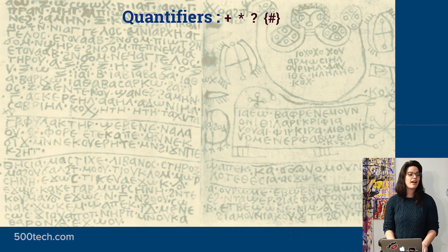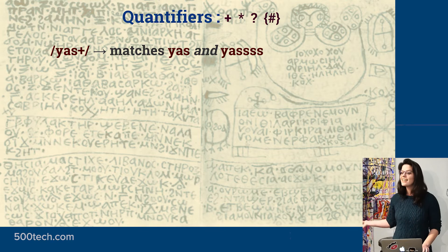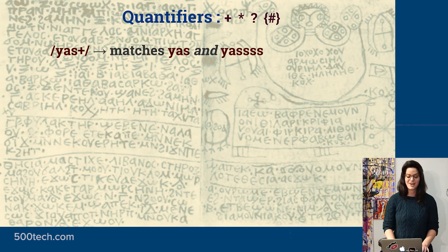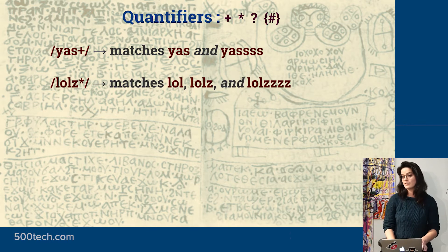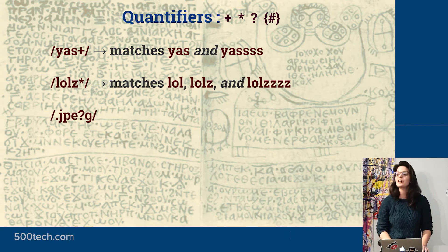There are also quantifiers, which tell the search engine to match a certain number of the preceding character. The plus operator matches one or more of the preceding character. The asterisk matches zero or more — so it'll match 'lol', 'lols', and 'lolzzz'. The question mark is an optional operator — it matches zero or one time, so it can match 'jpeg' with the 'e' or without it.